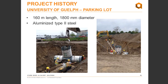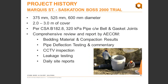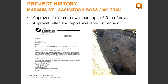The low cost of CSP was the driver for product selection, along with the speed at which custom fittings and manholes could be fabricated and delivered to site. The next project was a trial conducted by the City of Saskatoon to investigate lower cost storm sewer material options. Three different diameters of 320 kPa bell and gasket HDPE pipe were installed under varying heights of cover on Marquis Street. The City hired ADECOM to conduct a thorough review of the pipe after installation. The end result was approval of BOSS 2000 for storm sewer use in the City of Saskatoon up to six meters of cover.